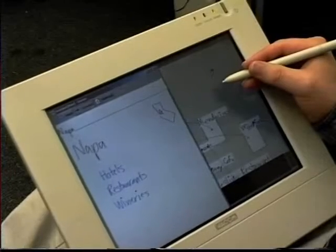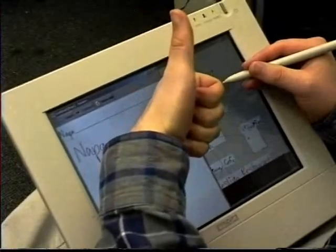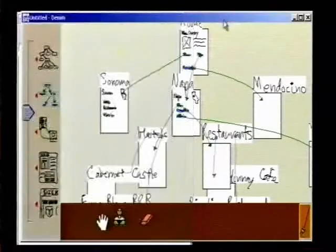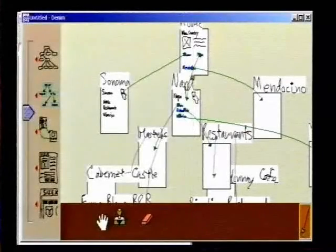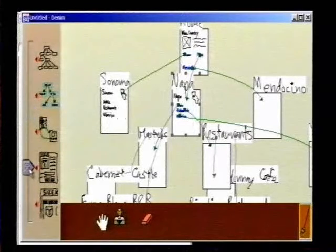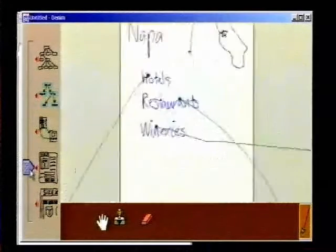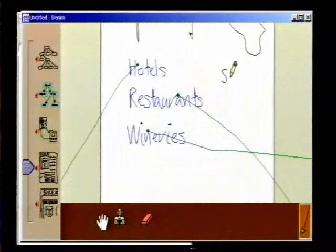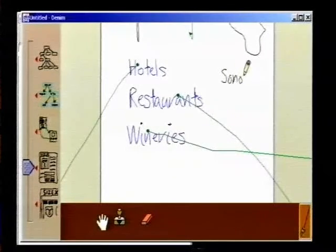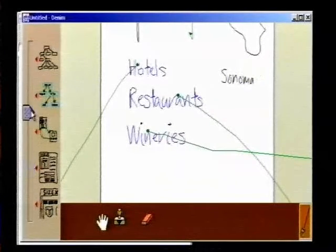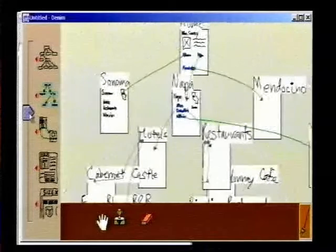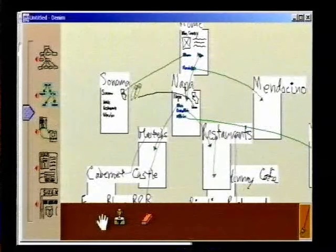Bob is struck by sudden inspiration to edit the page he is looking at. He decides to add a hyperlink from the Napa page to the Sonoma page. So he switches to the main Denim window, zooms into the Napa page, and writes Sonoma. Then he zooms out to storyboard view, and adds a navigational arrow from the Napa page to the Sonoma page.